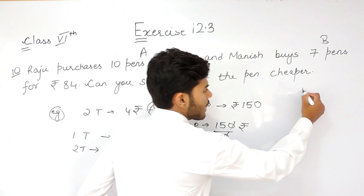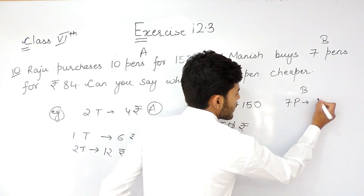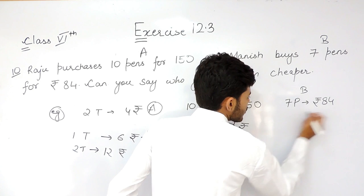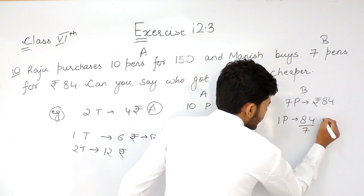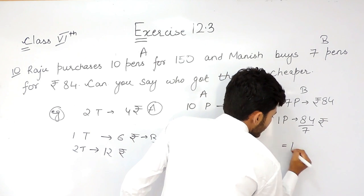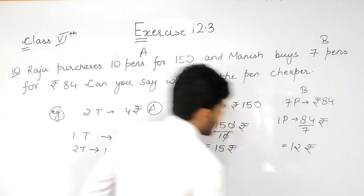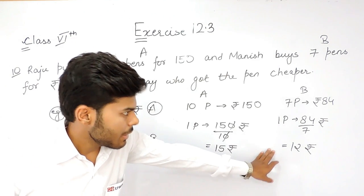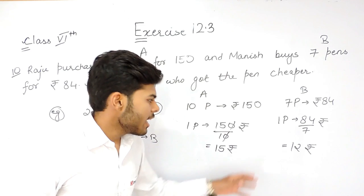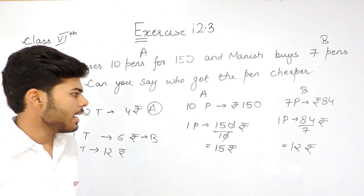Similarly for type B, 7 pens for 84 rupees means 12 rupees per pen. You can easily see that the pen of type B is cheaper than type A.